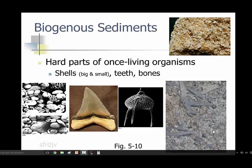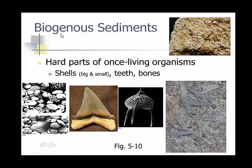Hello, and what we're going to do is unit 5-2, which is going to be biogenous and hydrogenous sediments. Biogenous sediments actually deal with bio-created sediments. These usually come from the hard parts of once-living organisms, like shells or teeth. And you can see this picture shows quite a bit of fossilized material or material that's actually just fallen out.